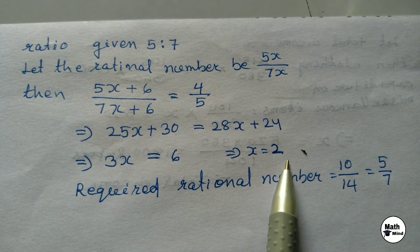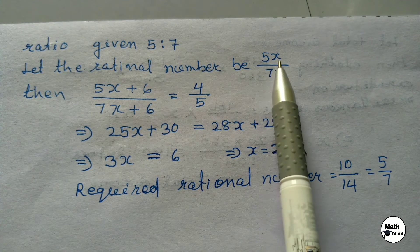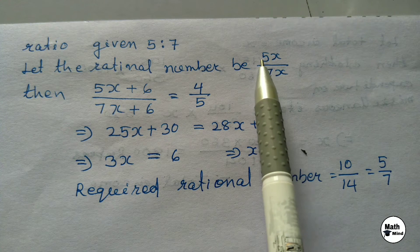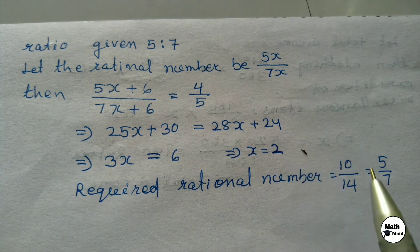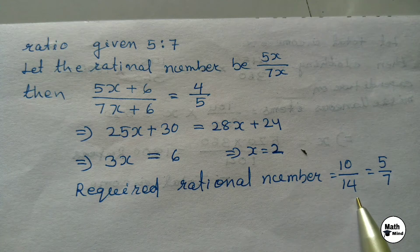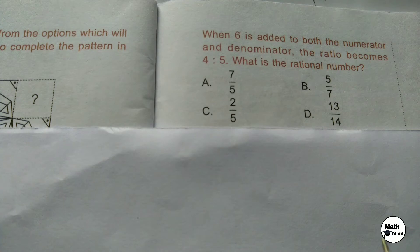Hence the required rational number is 5×2 / 7×2 = 10/14. In simplest form, 10/14 = 5/7. Option B is correct: 5/7.